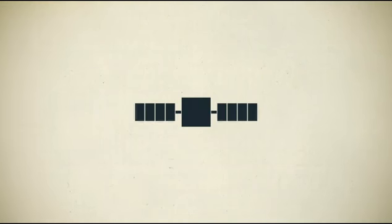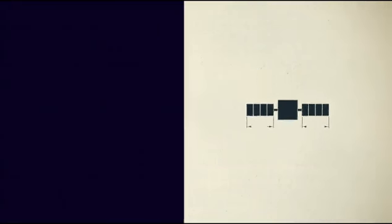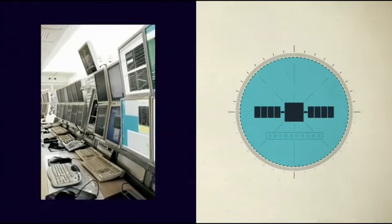Once the satellite has reached its orbital position, the control station on Earth signals the solar panels to open. These panels can be 20 to 25 meters wide. The engineers on Earth now test all the systems to make sure that everything is functional.